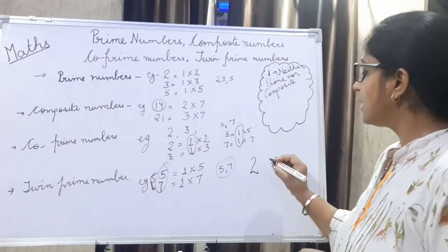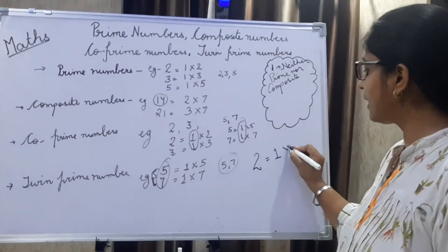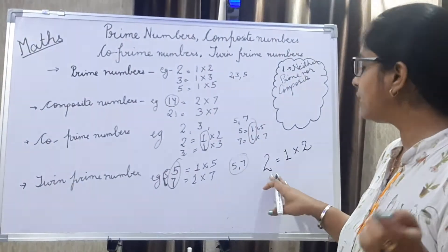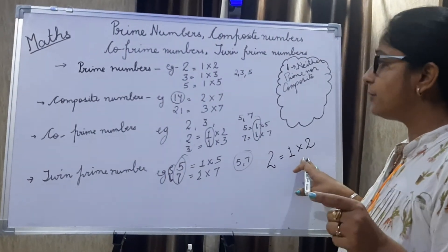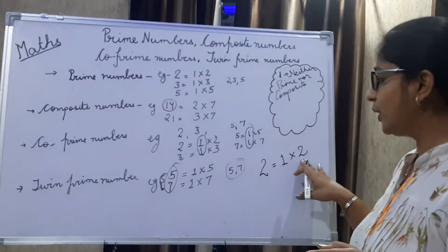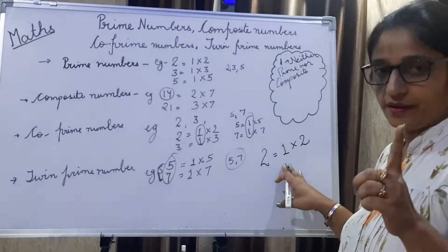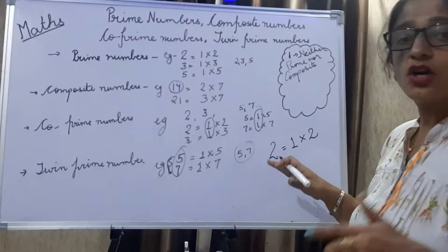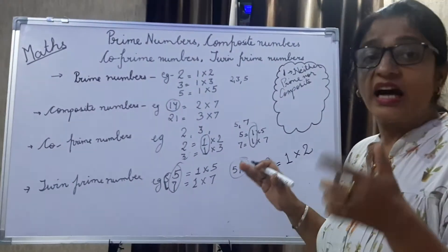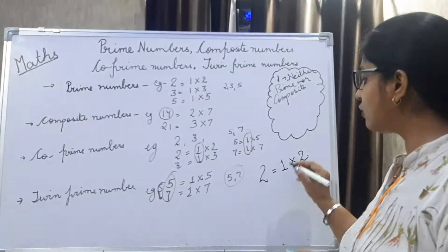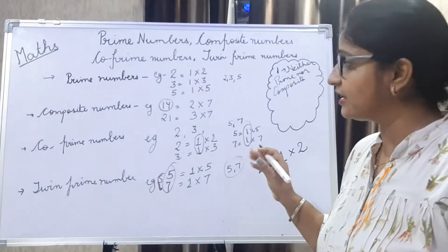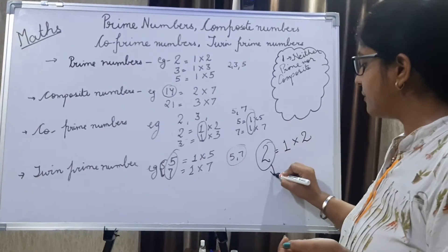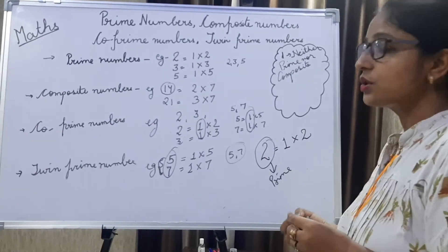Two is a composite number? Look, two factors are one and two. So this is composite? No. Two is a prime number because it is divisible by two itself and one. Yes, it is not a composite number because it does not have other factors other than one and itself. One and itself is not other factor. It cannot be a composite number. So two goes as a prime number.